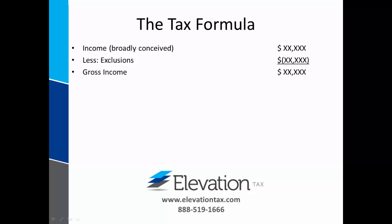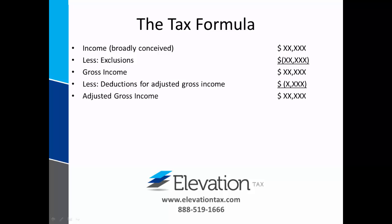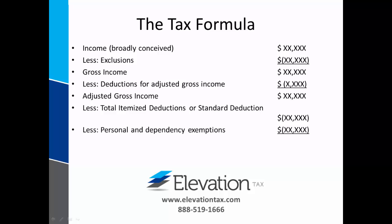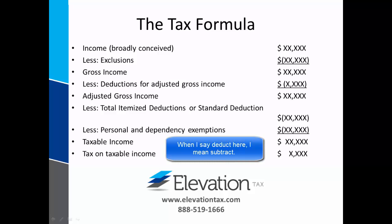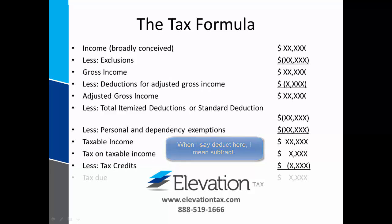So here is the formula: income less exclusions gives you gross income. You can subtract your deductions for adjusted gross income to arrive at adjusted gross income. You may then subtract your total itemized deductions or the standard deduction, and any personal and dependency exemptions that you qualify for, to arrive at your total taxable income. Your tax on taxable income is calculated and you can deduct any tax credits that you qualify for to arrive at the total tax liability due for the tax year.